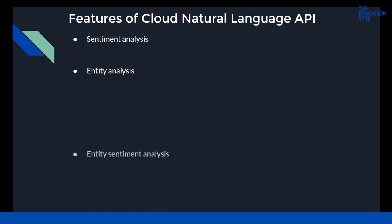Entity sentiment analysis inspects the given text for known entities — that is, proper nouns and common nouns — returns information about those entities, and identifies the prevailing emotional opinion of the entity within the text, especially to determine a writer's attitude towards the entity as positive, negative, or neutral. This is performed with the analyze entity sentiment method.